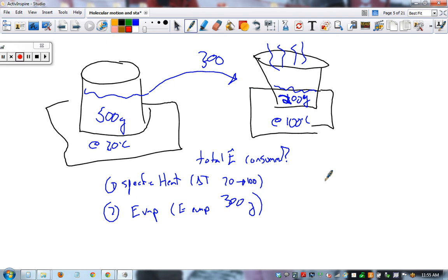Part one: Q equals MC change in T. 0.5 kilograms, you had to convert, times 4184 times our change in temperature of 80 degrees. That's 167,360 joules.